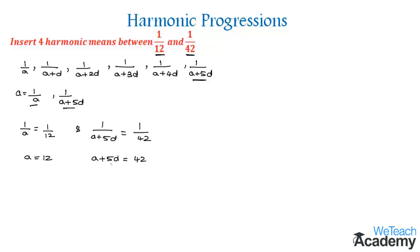We have the value of a as 12. Substituting the value of a into the second equation gives us 12 + 5d = 42.